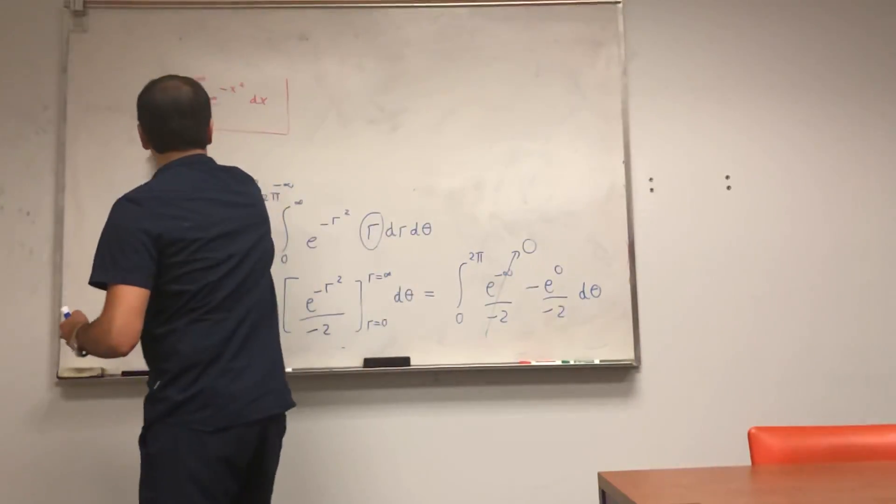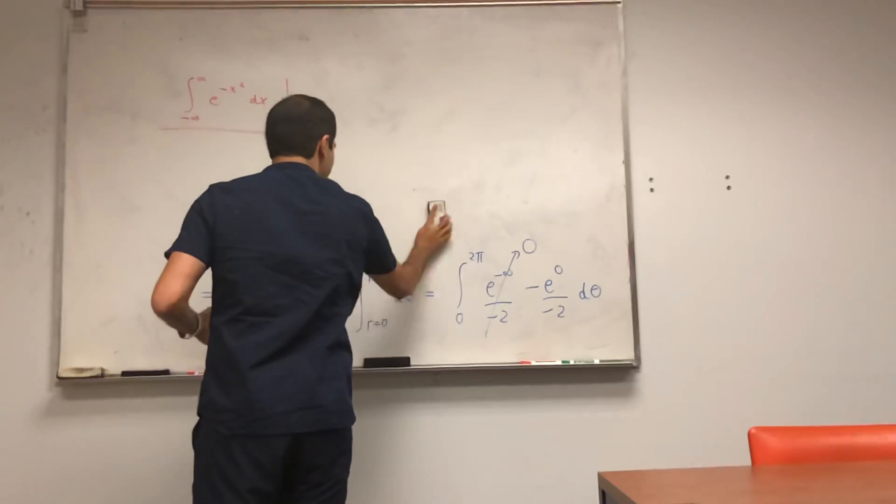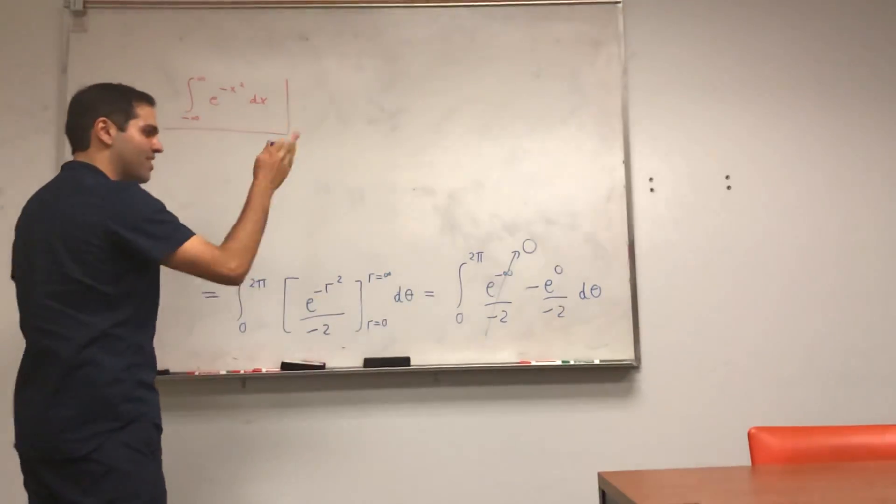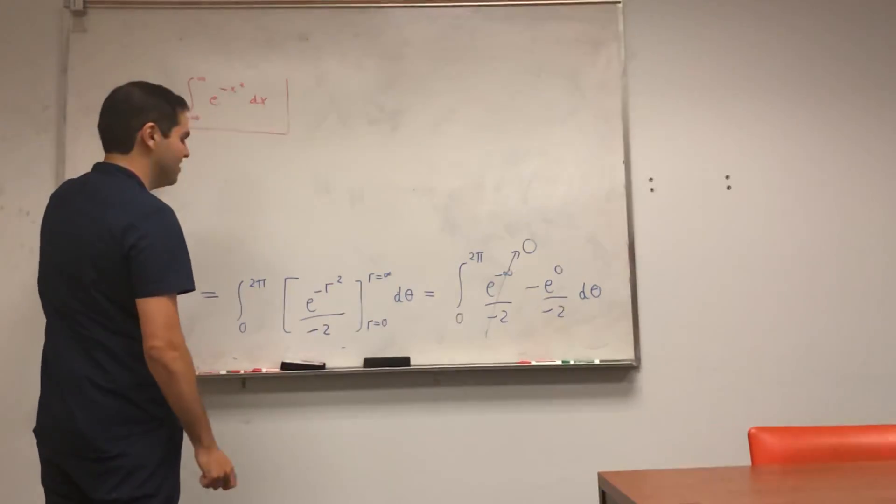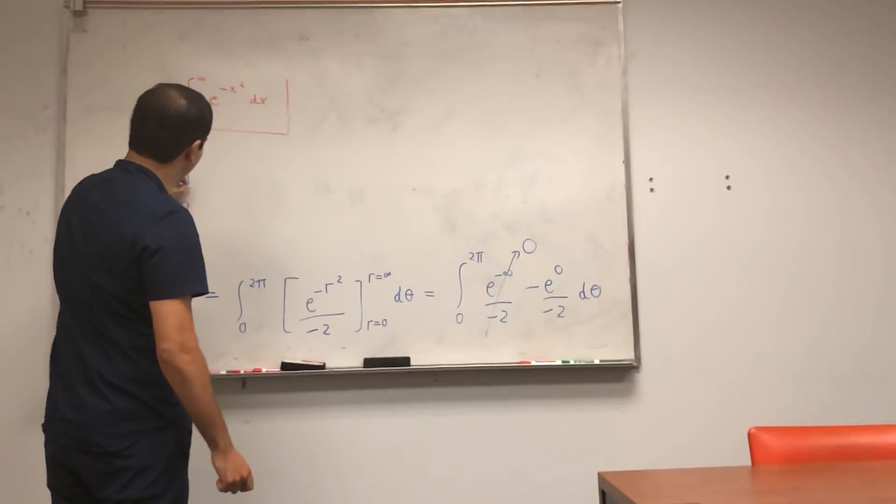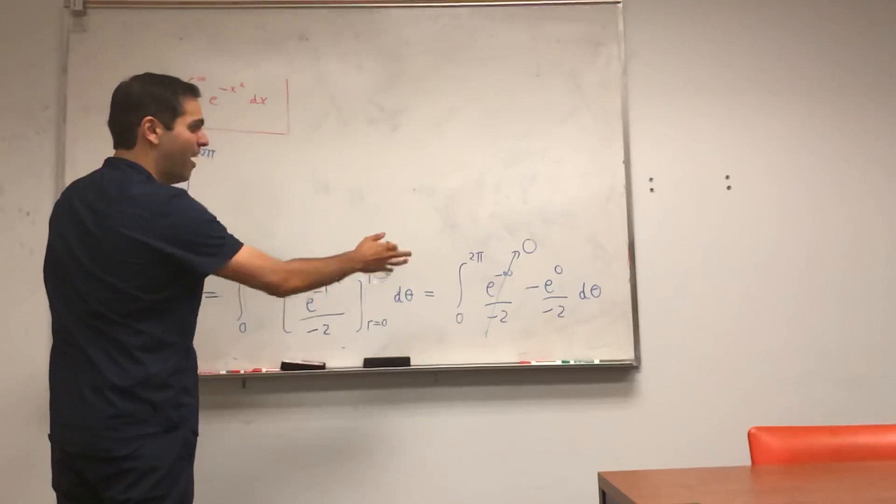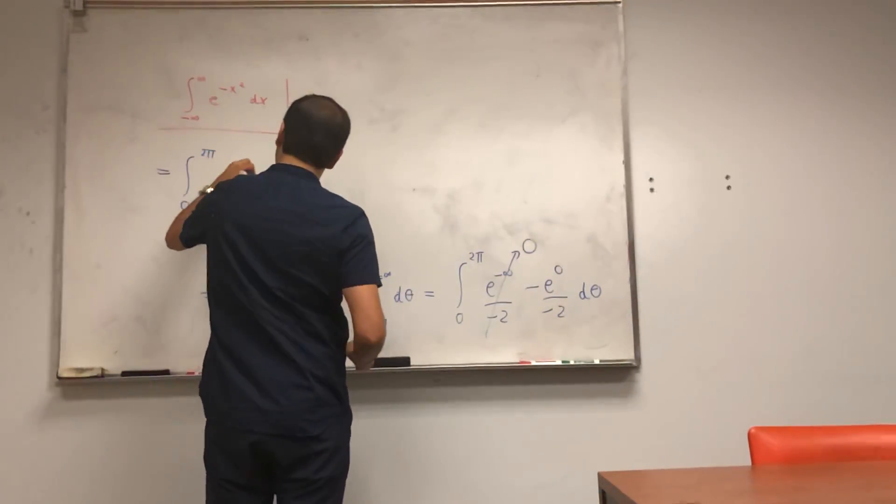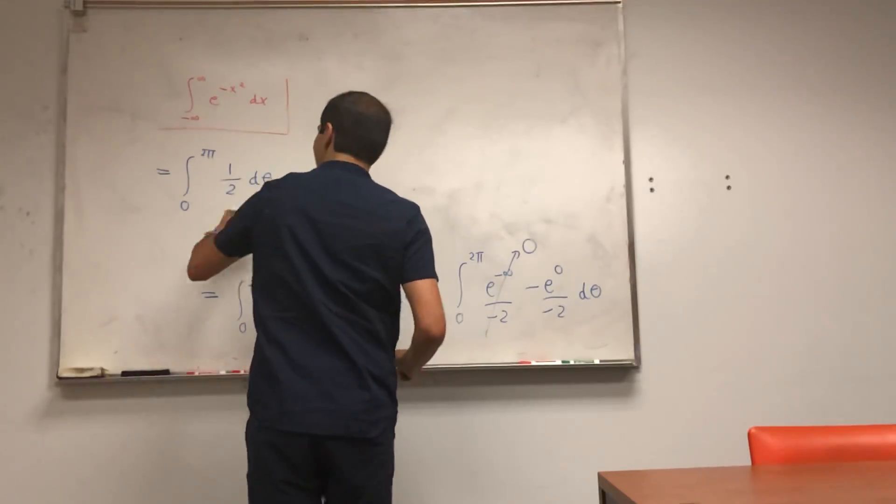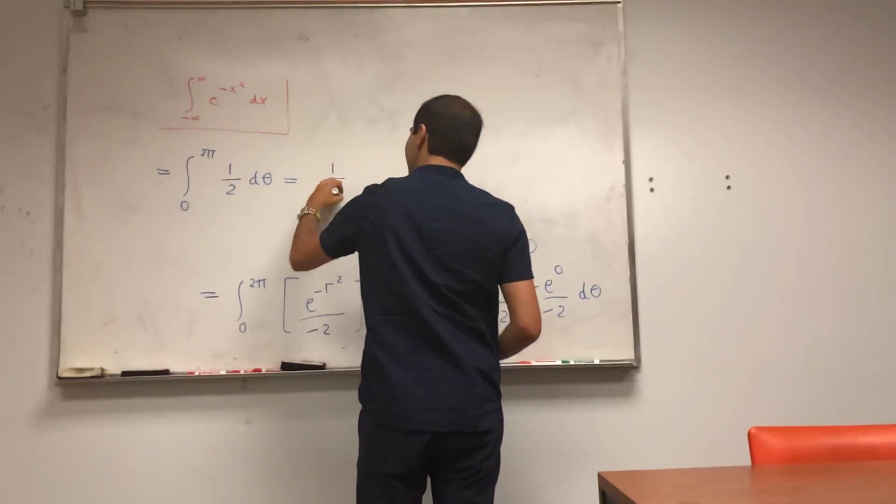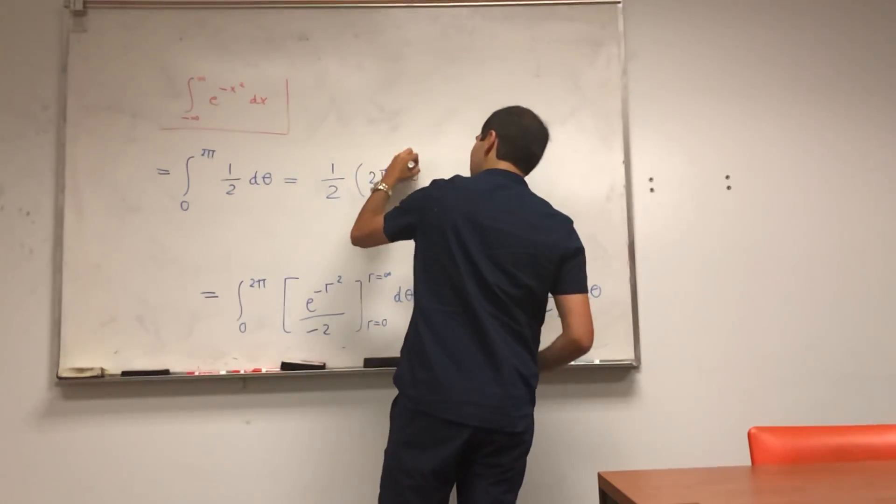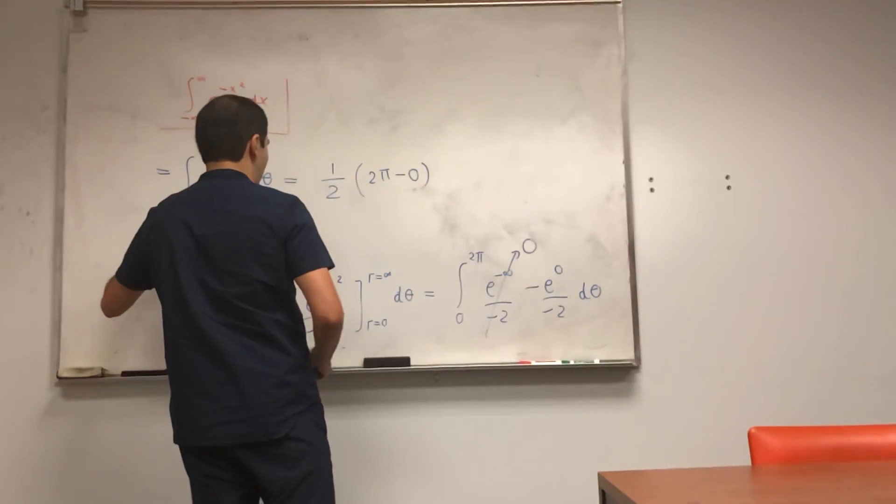And so we're left with, so minus minus 2 is like -1/2, I guess, in this case. And so the integral from 0 to 2π of, I guess, 1/2 in the end, dθ. And this we can just evaluate. It's a constant. So 1/2 times 2π minus zero, and so we get π. The most delicious constant.